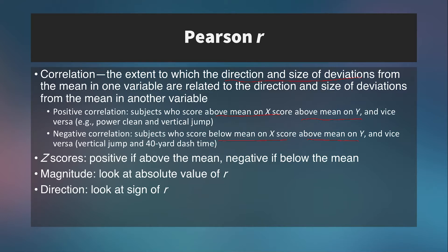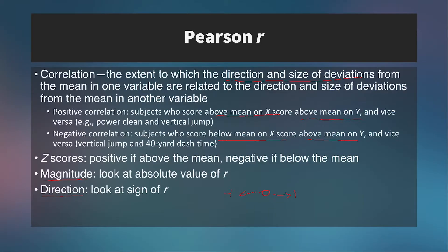In reality, a correlation takes the product of the z-scores of paired x and y values and adds up all those products. If the sum is above zero, it's a positive correlation; if below zero, it's a negative correlation; and if they cancel each other out, there is no correlation. We want to look at both the magnitude and direction of r. The closer r is to negative one or positive one, the larger the relationship, and the sign of r tells us whether that relationship is positive or inverse.